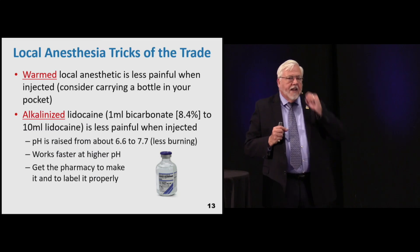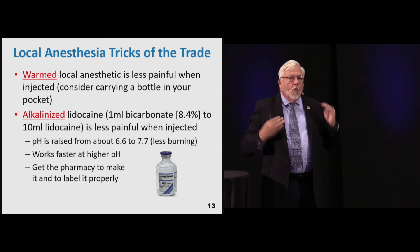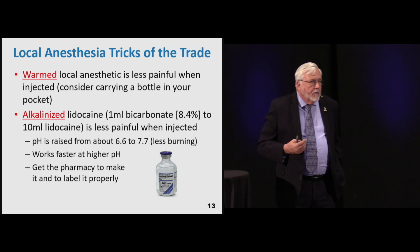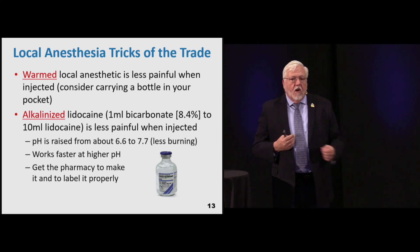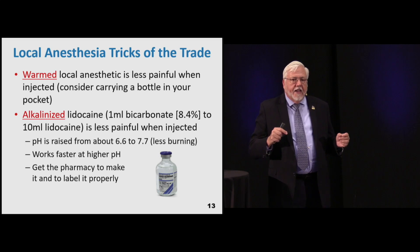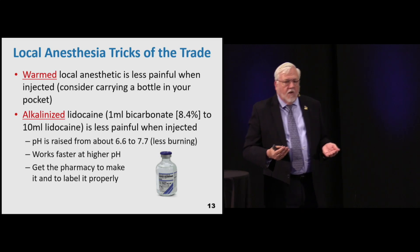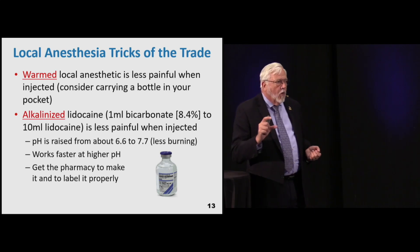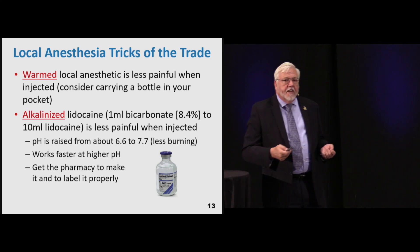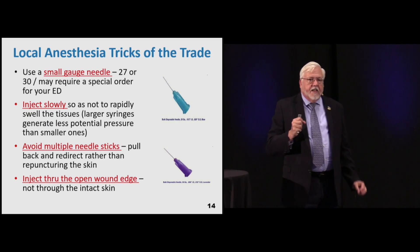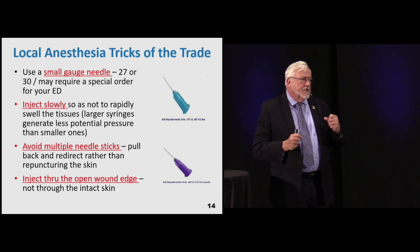Some local anesthesia tricks: if you warm up the anesthetic it's less painful when you inject it - take that bottle and put it in your pocket for a while. Also, alkalizing lidocaine using about 1 mL of bicarbonate to 10 mL of lidocaine is less painful on injection - it raises the pH a little bit and works faster. You may need the pharmacist to make a bottle and label it correctly. Also, use a small gauge needle - about 27 or 30 gauge in your ED.